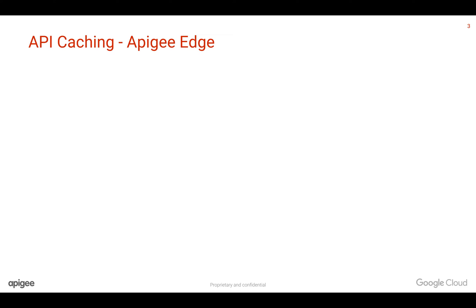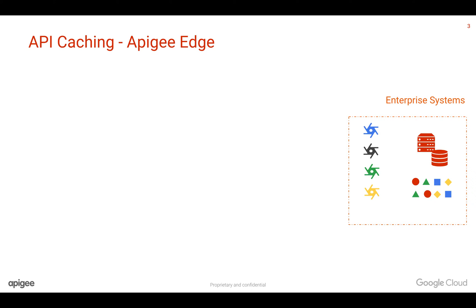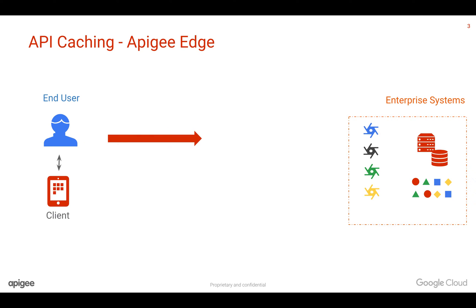Let's understand how Apigee Edge Platform can help you improve the performance of APIs using API Caching. Let's say you have backend systems where data is stored, and clients where end users are making API calls to backend systems and getting back responses displayed in a mobile application. Typically, the response takes anywhere between a few hundred milliseconds to a few thousand milliseconds. Let's call these APIs 'garden snail APIs' because they are taking too much time.